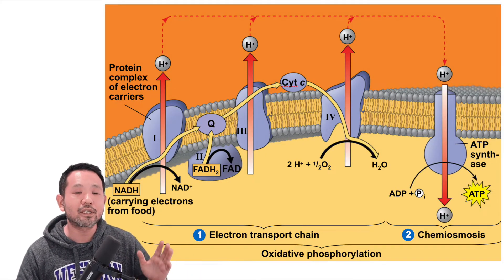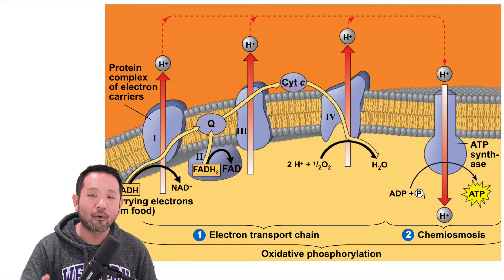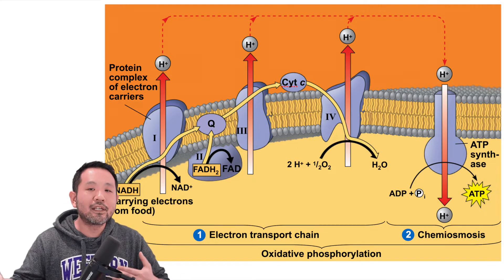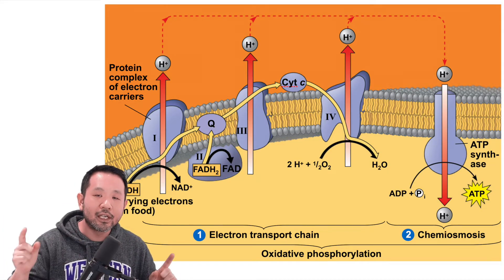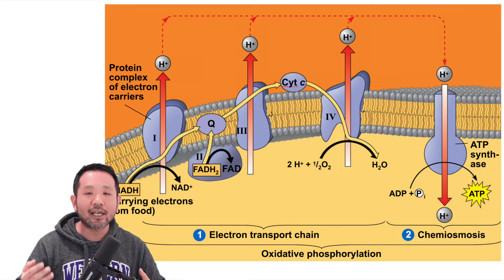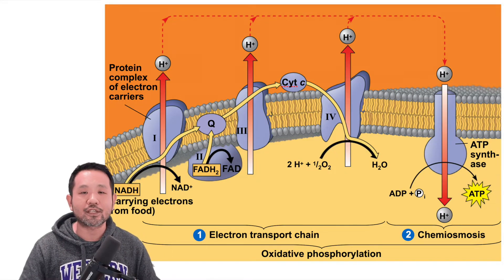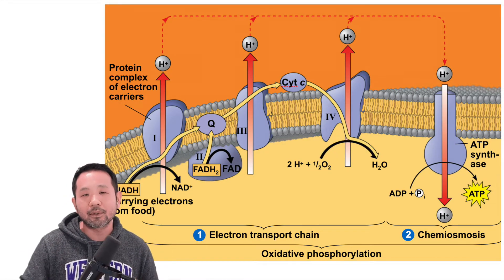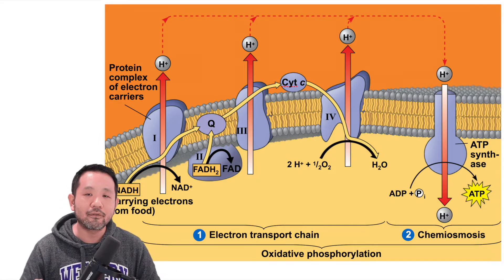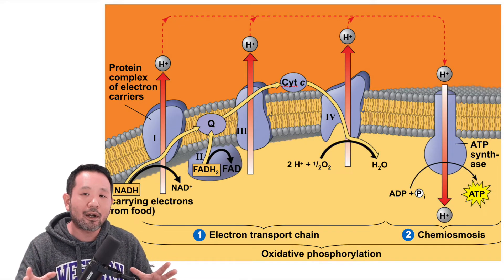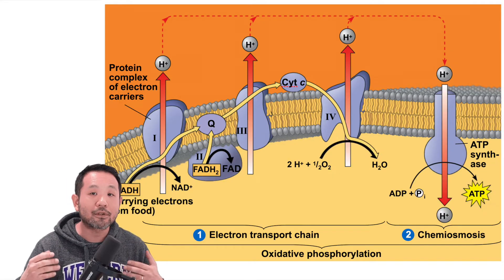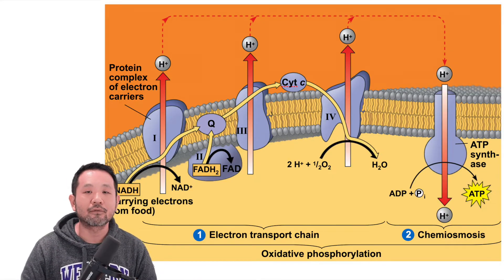Everything from protein complex one to protein complex four is called the electron transport chain, because they're literally transporting electrons and utilizing their energy to pump those protons into the intermembrane space. This is where knowledge from Unit 2 — understanding diffusion, concentration gradients and active transport, and how the semipermeable membrane can block out charged substances — is going to be really helpful. If you don't understand what's happening in this last part, I would highly suggest revisiting Unit 2 or Chapter 7 in the Campbell Biology textbook.